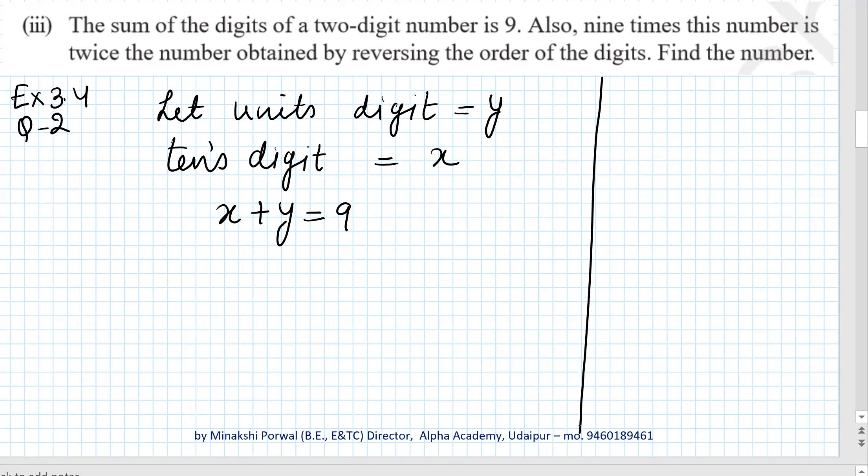Now what will be the original number? Suppose we have a number 36. Units place is 6, tens place is 3. How do we obtain this number? 6, the units place, is multiplied by 1 and tens place is multiplied by 10. This way we obtain number 36.